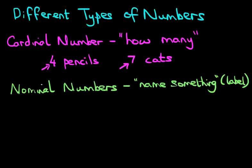For example, let's say we've got a car. The car is in a race. I'm not very good at drawing, so bear with me. So this car is in a race, and the car's number is 418. That is the label of the car — it has named the car. Therefore, that is a nominal number.